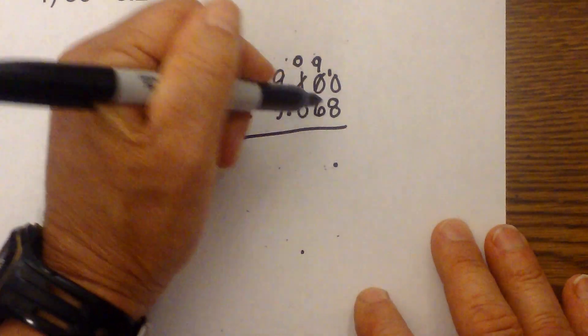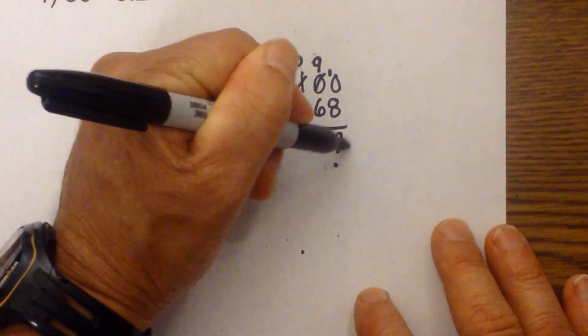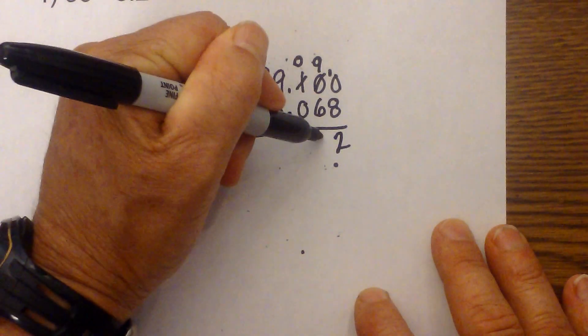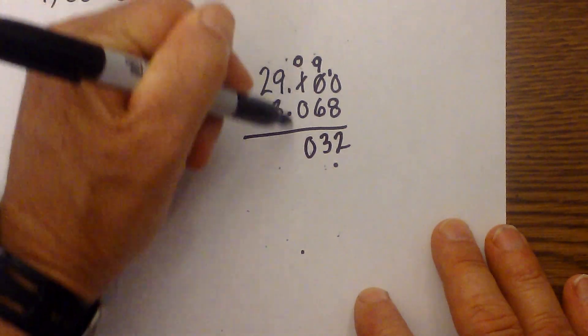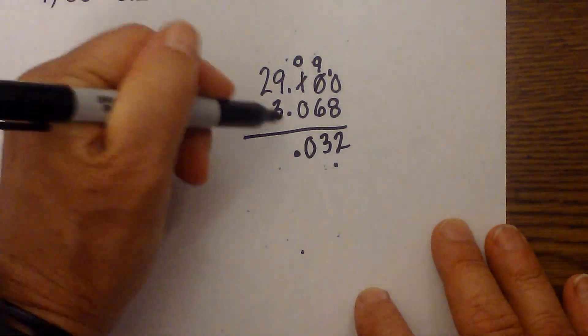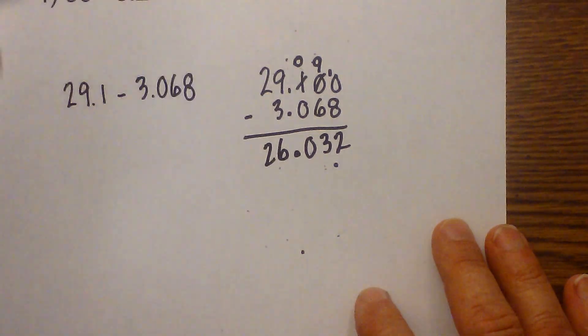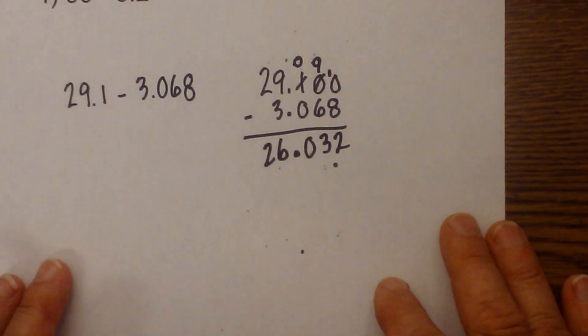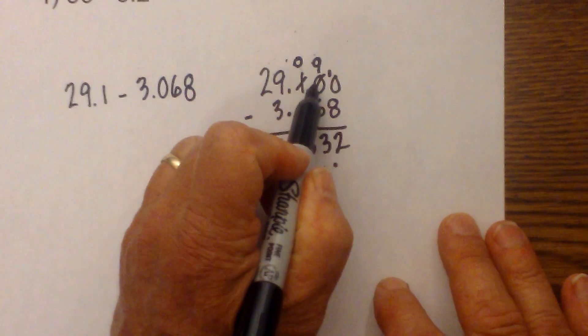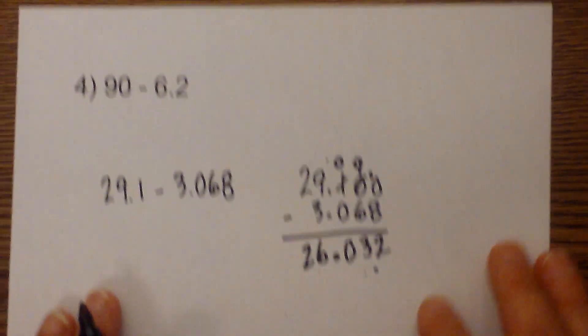Now ten minus eight is two, nine minus six is three, zero minus zero is zero, bring down the decimal. Nine minus three is six, and we can bring down the two, so we get 26.032. That's a little tricky, just remember you cannot borrow anything from a zero.